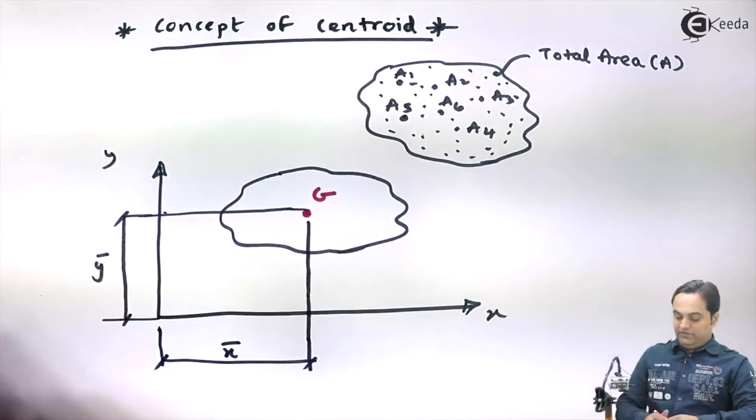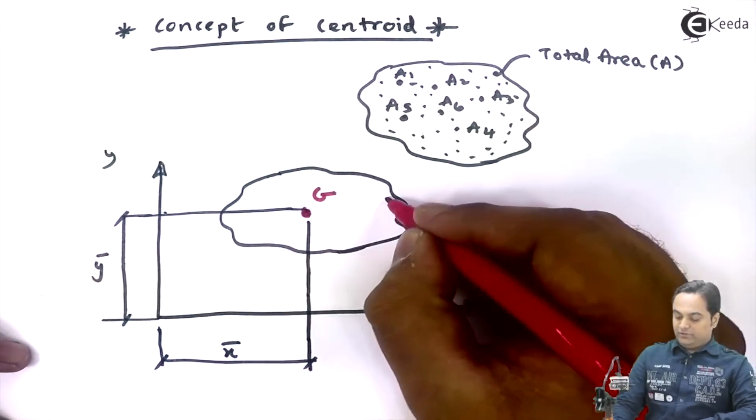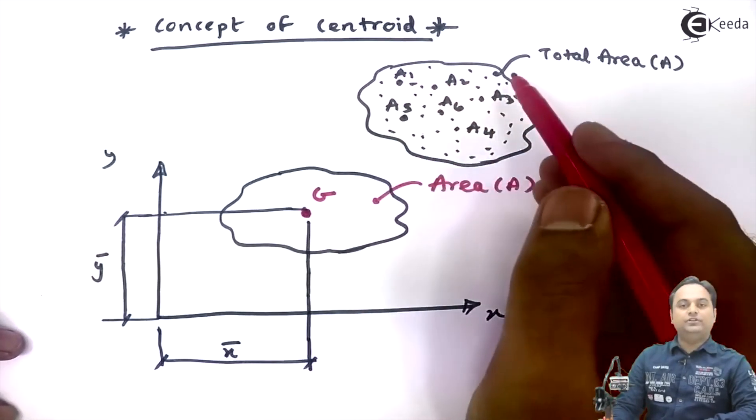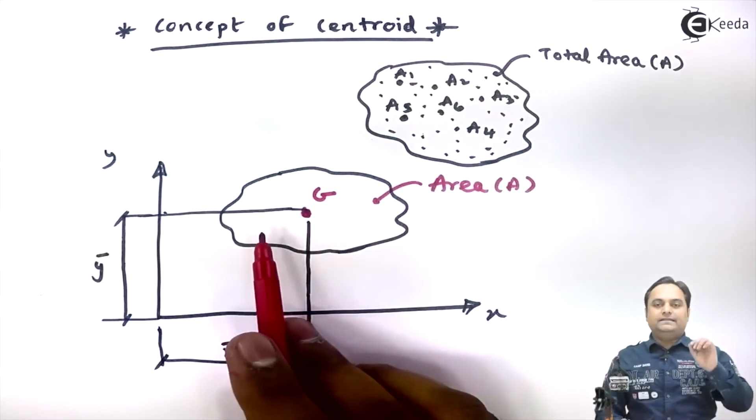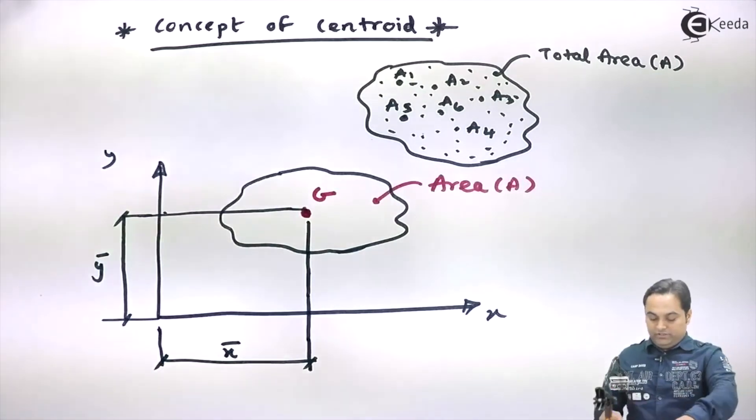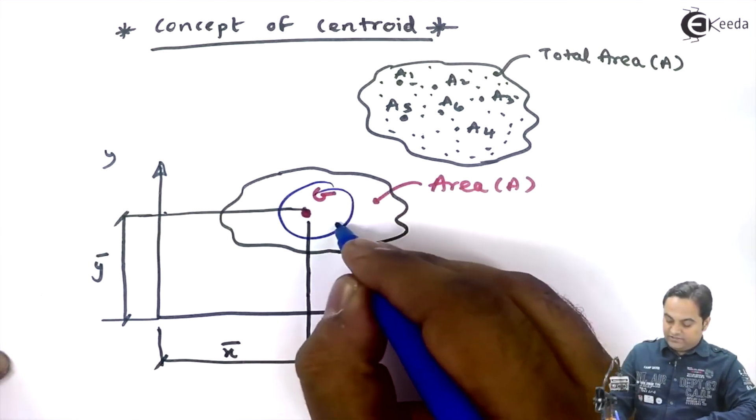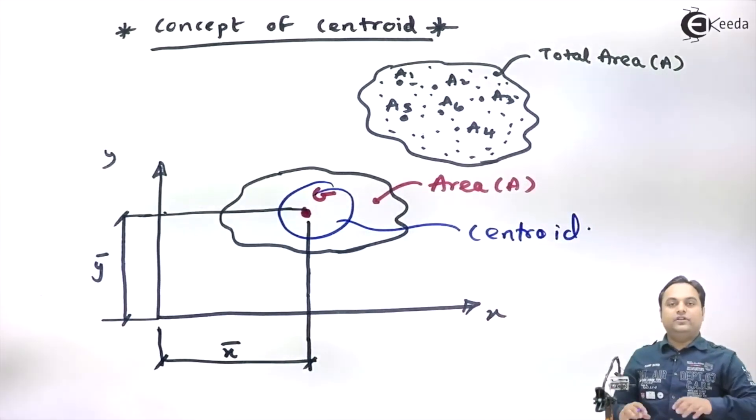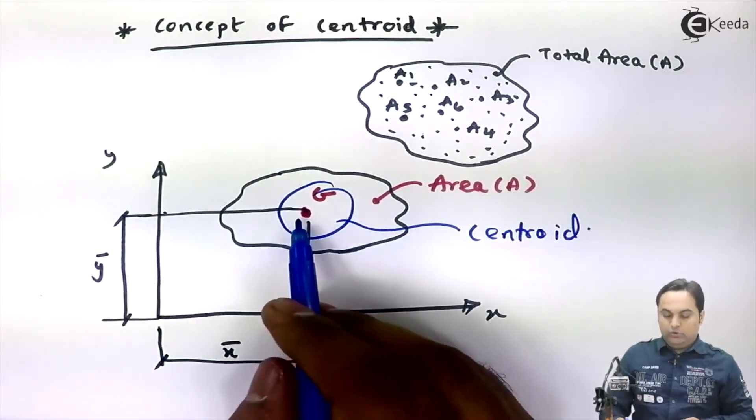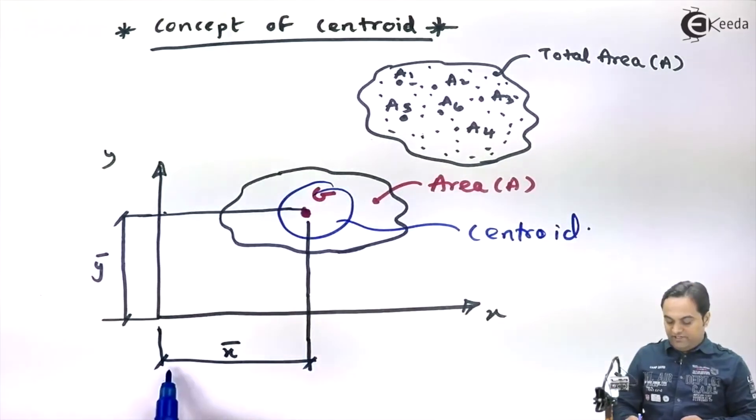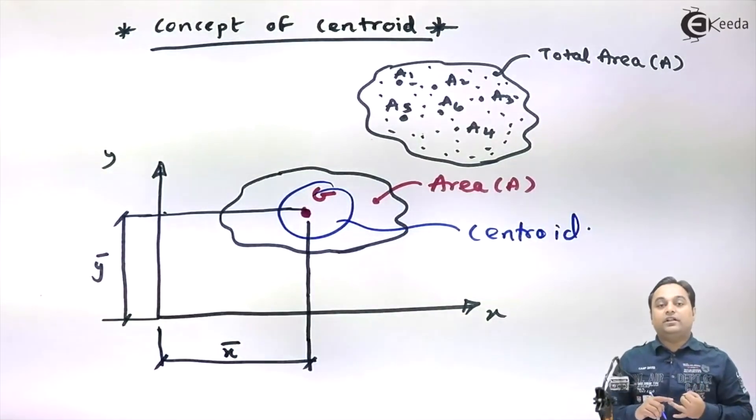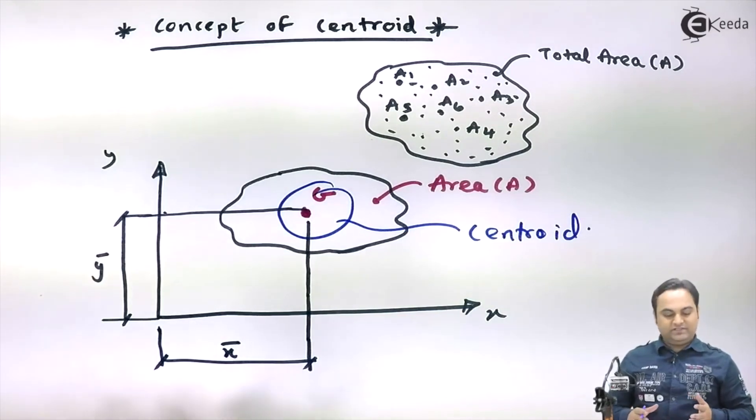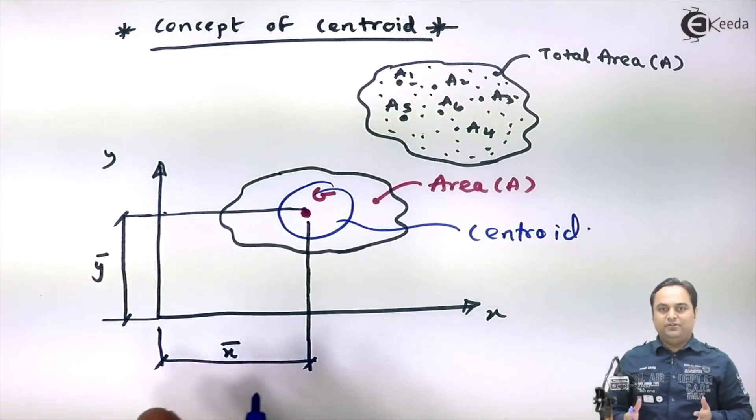And the location of centroid with respect to x-axis, the distance of the centroid is Y bar. So in other words, here we have a single point which is denoting the entire area. The letter G which I have written indicates the centroid. So it is very much clear from this concept of centroid that if we want to locate the centroid, it would be located by finding the values of X bar and Y bar. X bar, Y bar are the coordinates which give us the centroid, and in this chapter we will just locate the centroid.